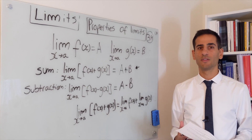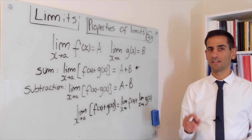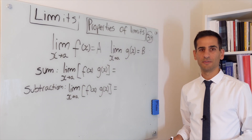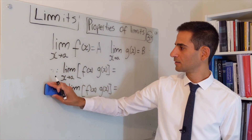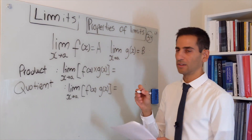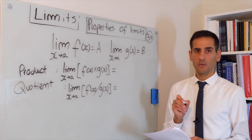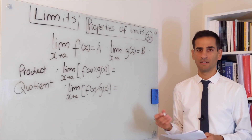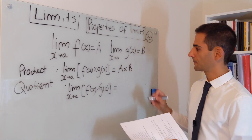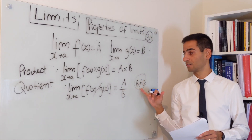There are two other important properties covering multiplication and division. For the product property: the limit as x goes to a of f(x) times g(x) equals A times B. For the quotient property: the limit as x goes to a of f(x) divided by g(x) equals A divided by B — provided that B is not zero. That caveat about B not being zero is important.